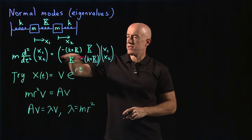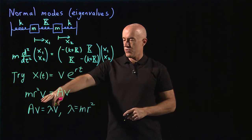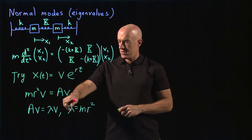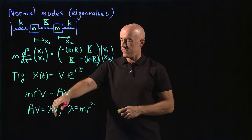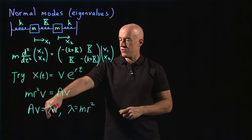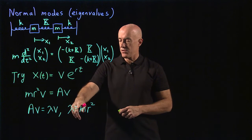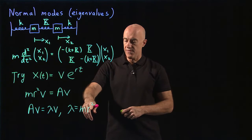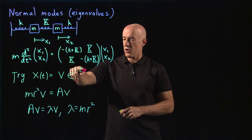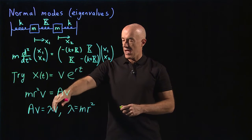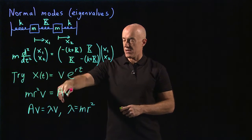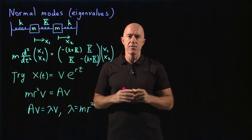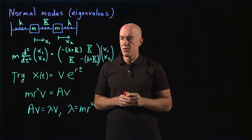We've reduced the mathematical solution of this equation to an eigenvalue problem. Since this is a two-by-two matrix, we're going to need to find two eigenvalues lambda and two eigenvectors v. Then, using lambda equals m·r², for each lambda we're going to find two values of r — those are the values that appear in the exponential function. So for each eigenvector v we'll have two values of r. It's a bit different for the second order equation than for the first order equation.